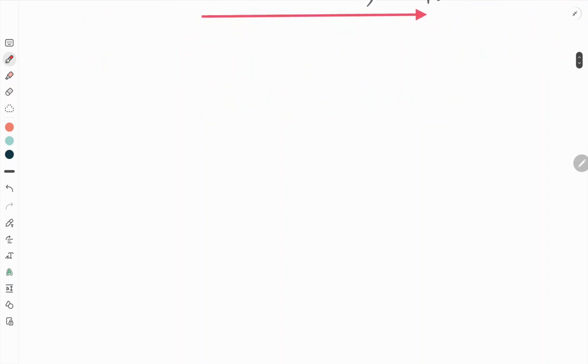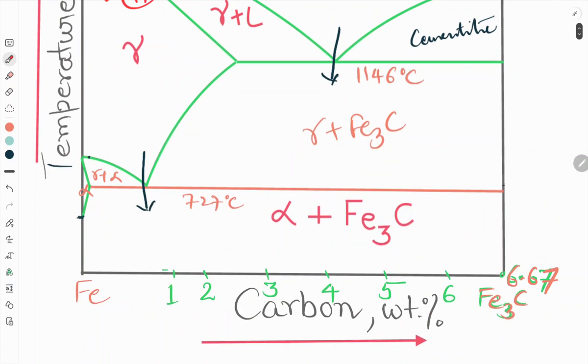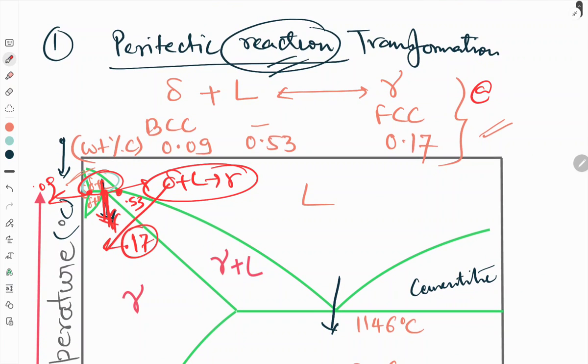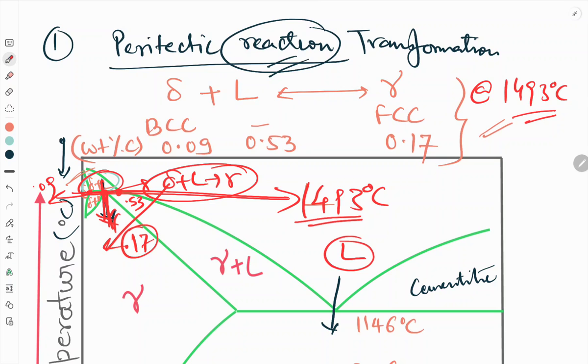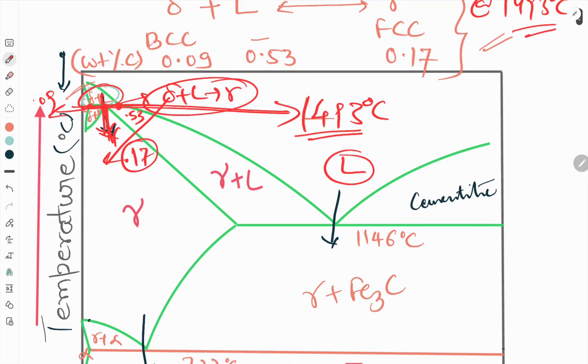Now we will go to the second reaction, that is eutectic reaction which occurs at 1146 degree temperature. This reaction occurs at 1490 degrees centigrade temperature at this temperature, that is liquid phase. Now we will see eutectic reaction that is at 1146 degrees.